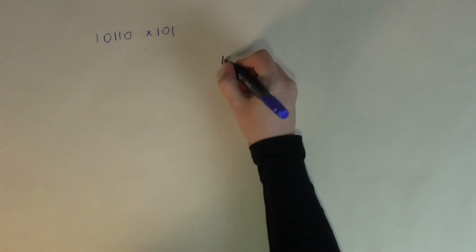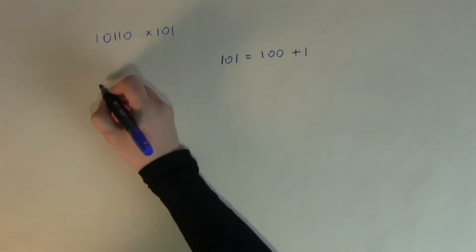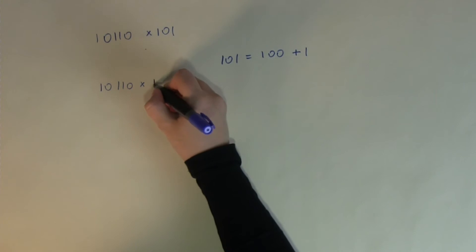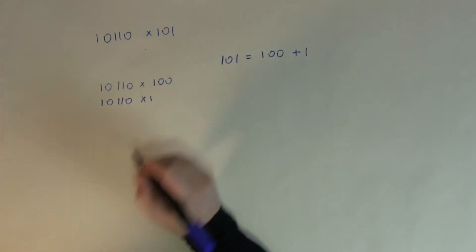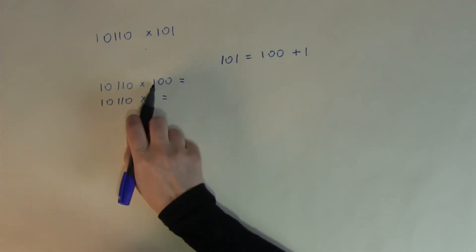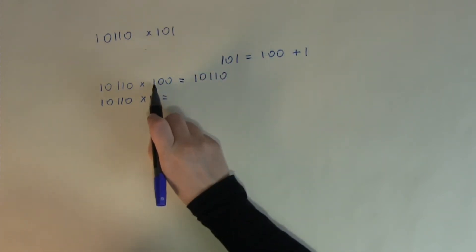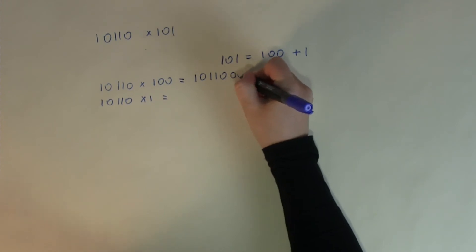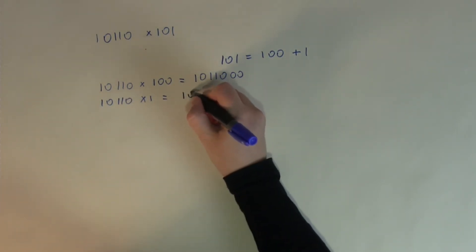So the multiplication becomes: 10110 × 100 and 10110 × 1. This is much simpler in binary than in decimal, because we only have digits 1 and 0. Multiplying anything by 1 just stays the same, so I just copy the number down. And because I'm multiplying by 100, I just put two zeros behind it. Multiplying by 1, the result is just the number itself: 10110.